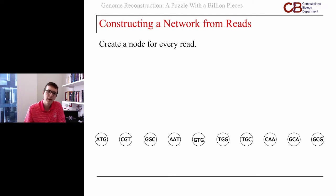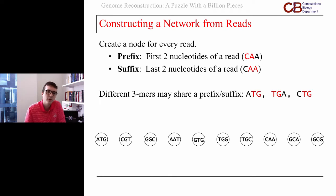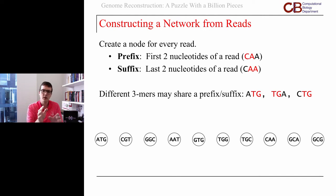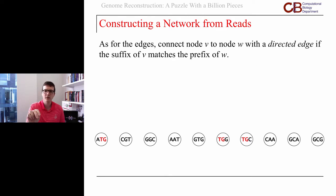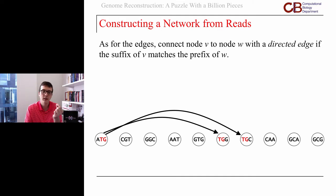We need to connect nodes based on whether or not they overlap. We'll define the prefix as every nucleotide but the last one, and the suffix as every nucleotide but the first one. We're trying to overlap these reads based on prefixes and suffixes — different three-mers can share a prefix and a suffix. For example, CTG and ATG share a suffix; ATG and TGA overlap because they share a suffix and a prefix. So ATG is going to connect to TGG and TGC because the suffix of ATG matches the prefix of both TGG and TGC.